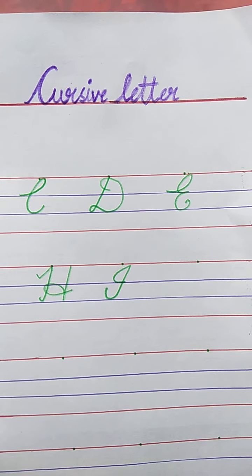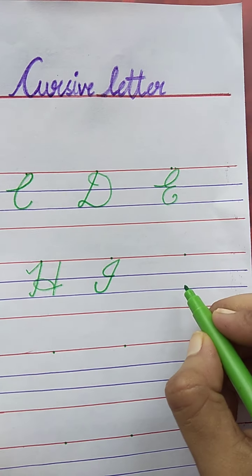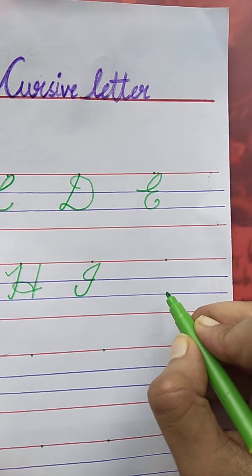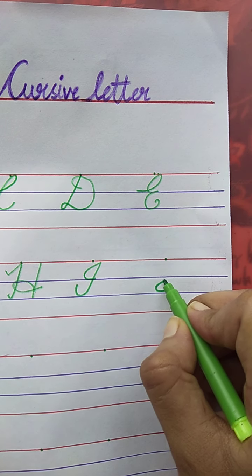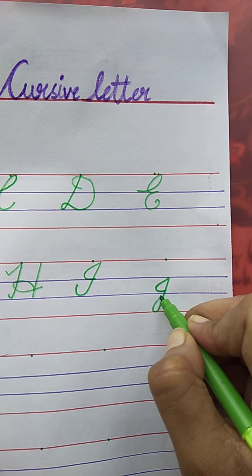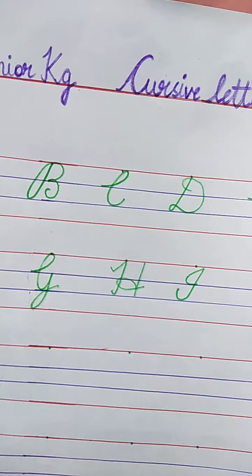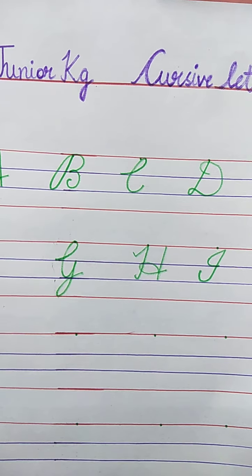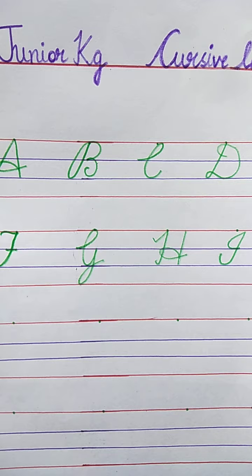Now, the next letter. J. J for Joker. Draw a curve, slanting line, and curve line. J for Joker. The spelling of Joker is J-O-K-E-R.